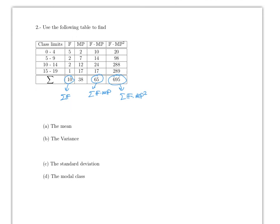Now for the grouped frequency table problem — the formulas are given, so this should be much faster. The sum of frequencies is given, as is the sum of frequency times midpoint, and sum of frequency times midpoint squared. The mean equals the sum of frequency times midpoint divided by sum of frequencies, which is 65 over 10, giving a mean of 6.5.